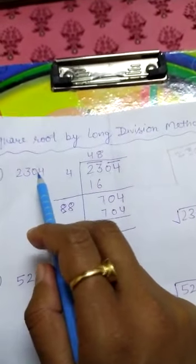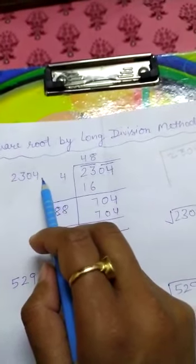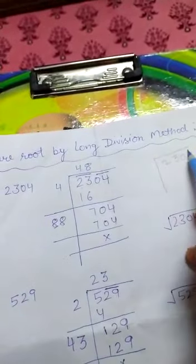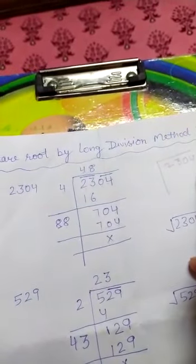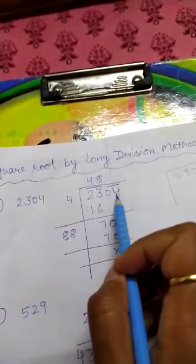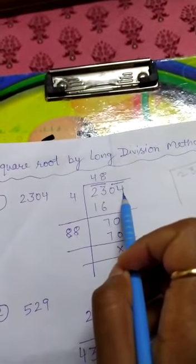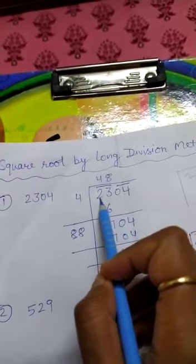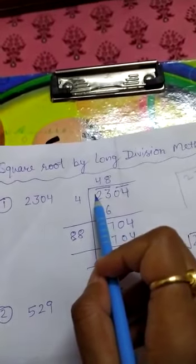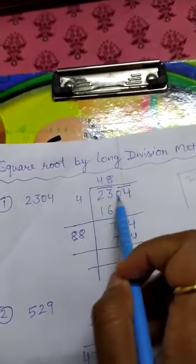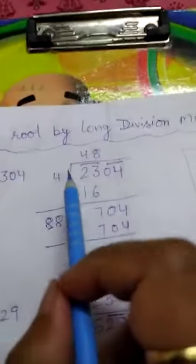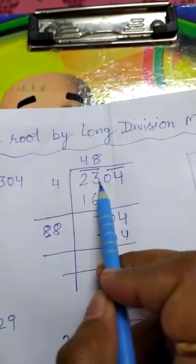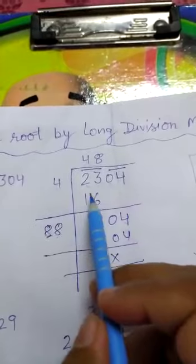For example, we have to find the square root of 2304. We will write 2304 and make two lines. We will make pairs from the last digits — the last two digits form one pair, the next two digits form one pair. So we are having two pairs: 04 and 23.